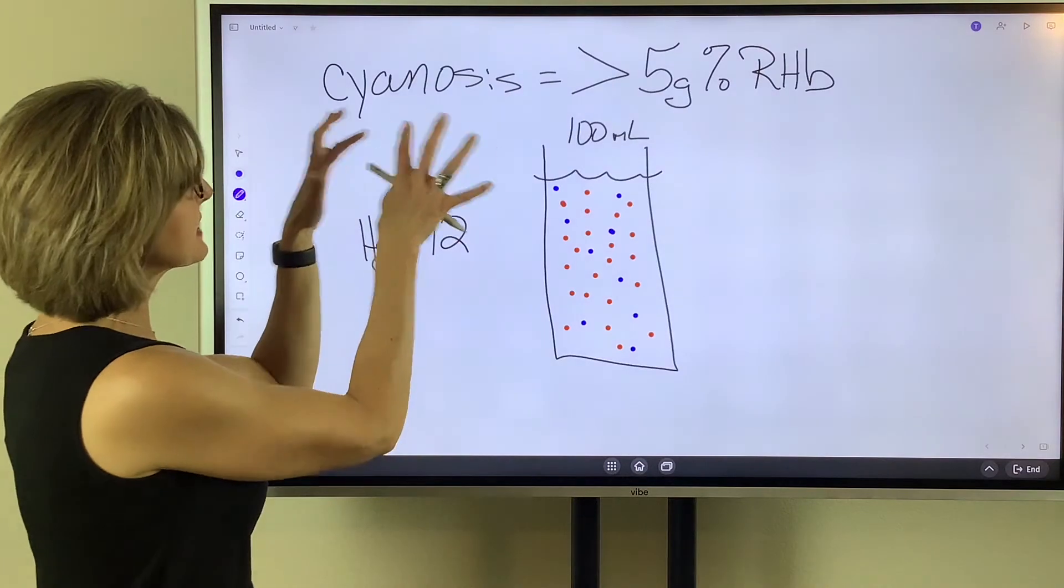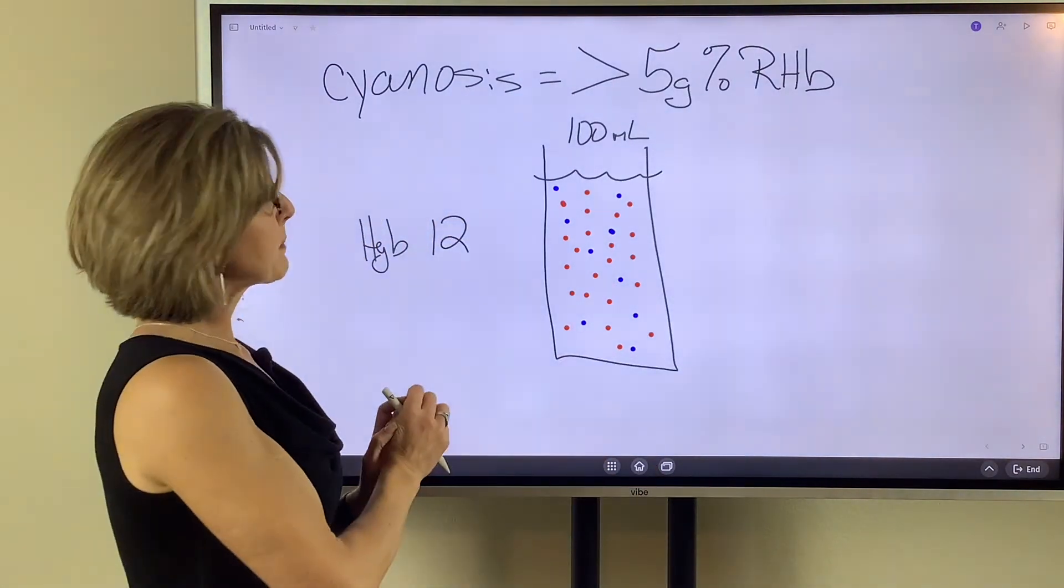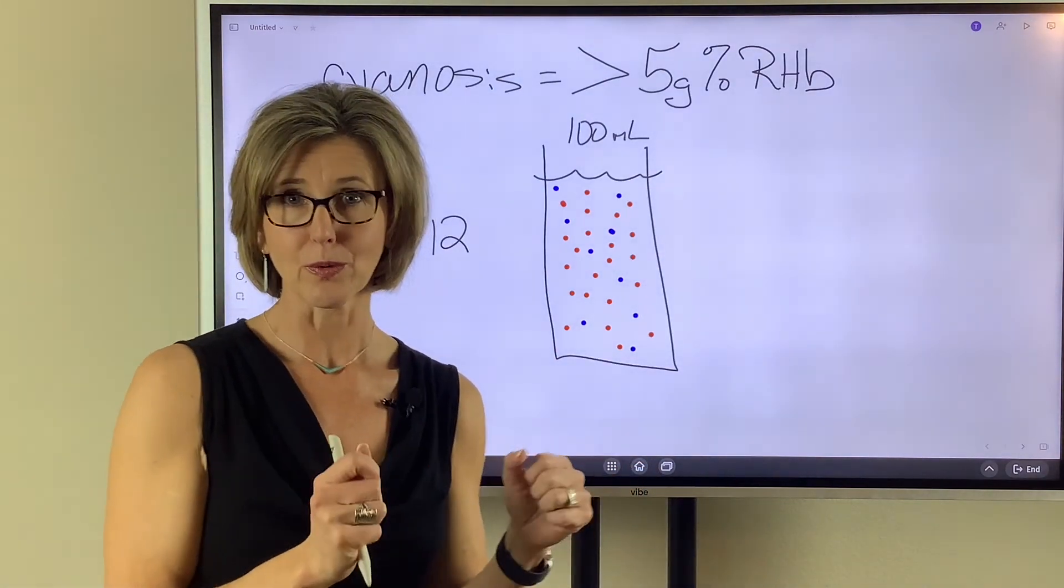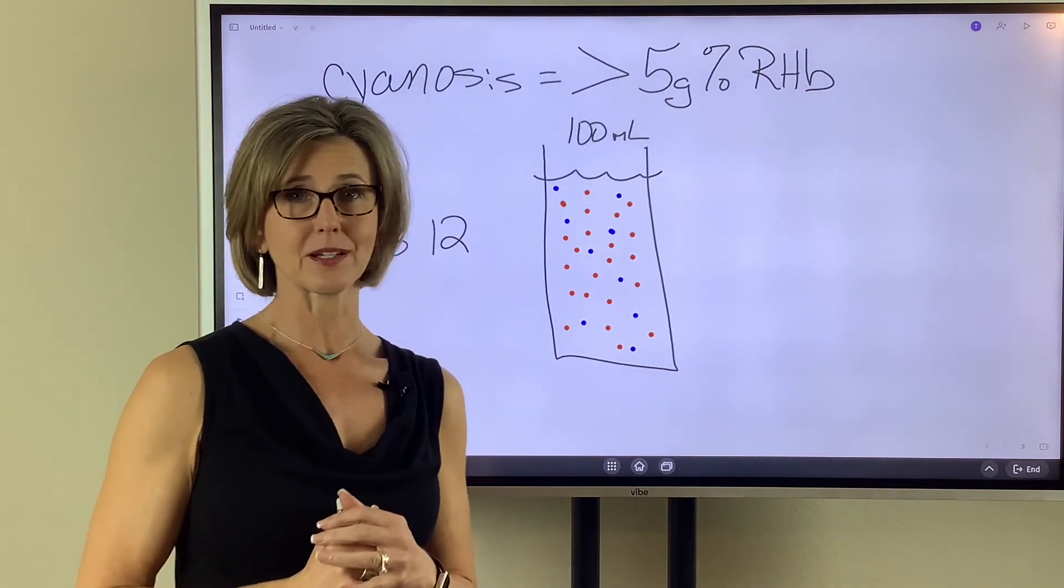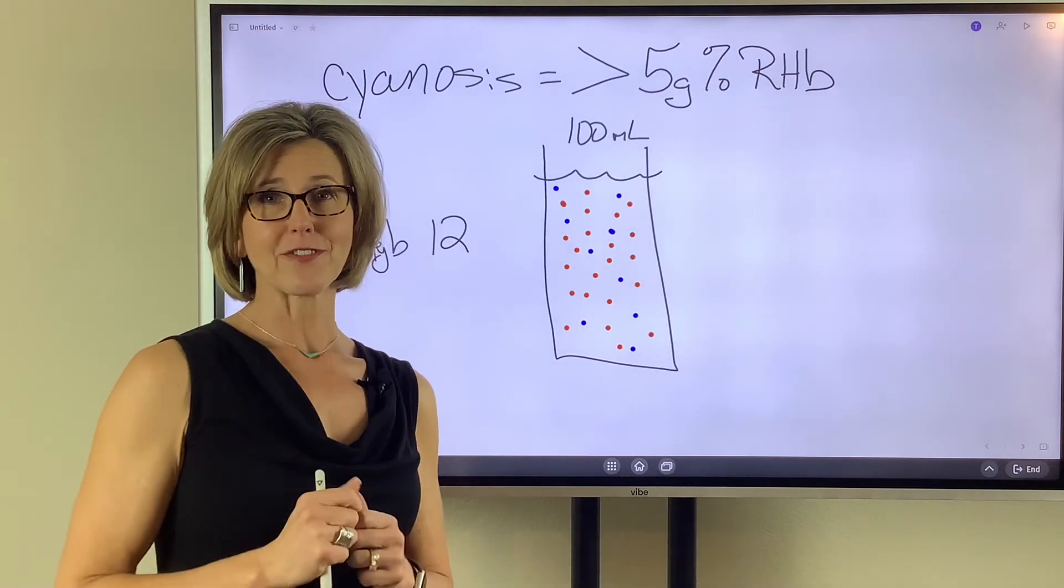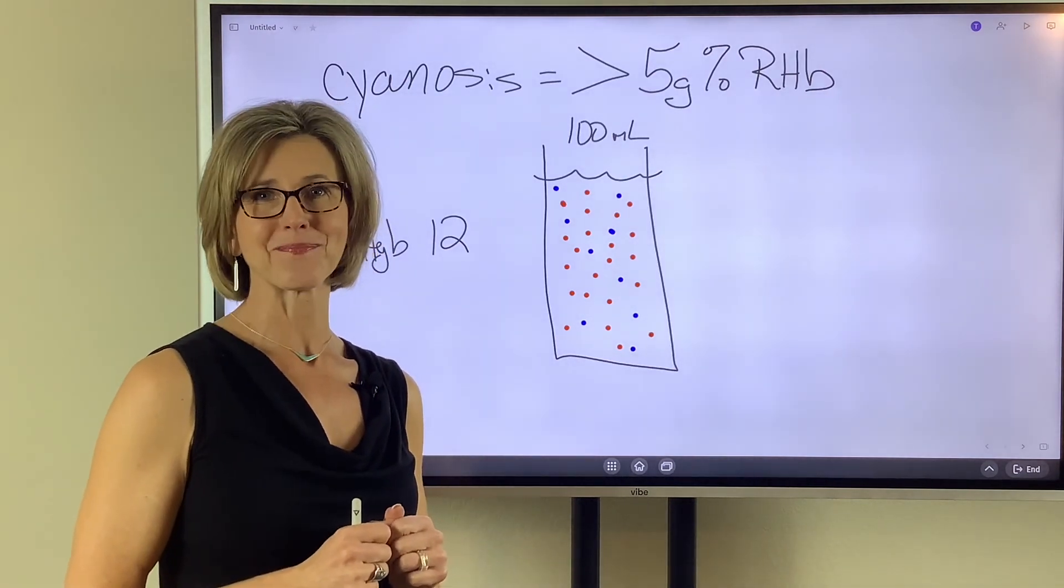So I hope this simplifies this concept because we're going to carry it forward. People that are polycythemic will turn blue without being hypoxic, and people that are anemic will be hypoxic without turning blue. So if you're interested to find out more about that, visit me on respiratoryhq.com. Have a great day.